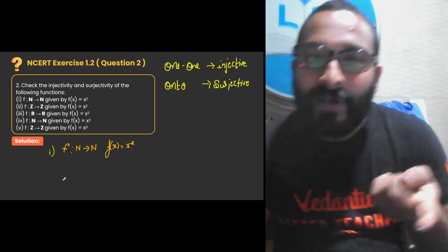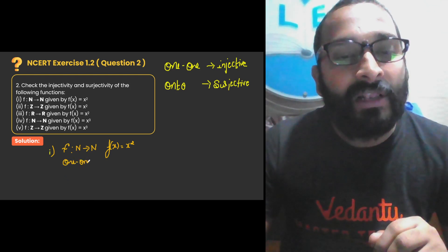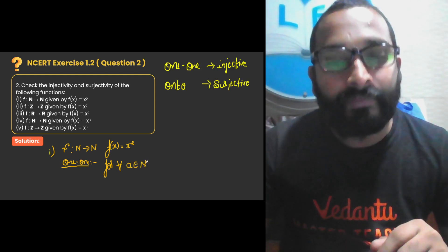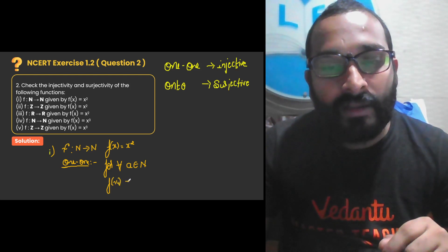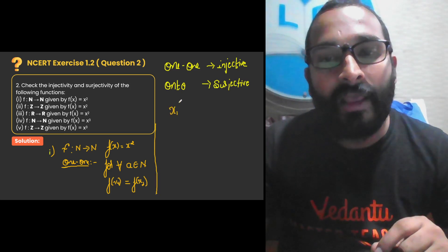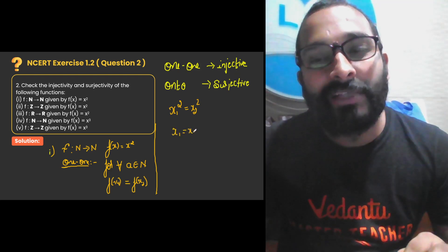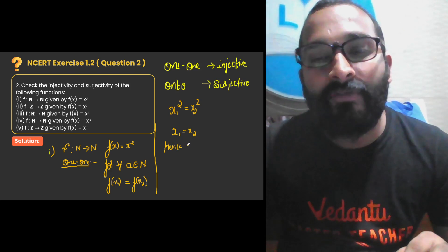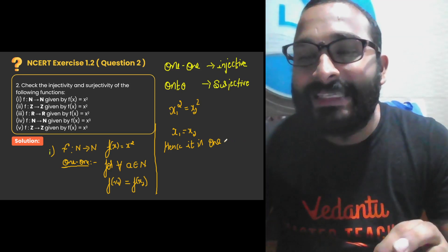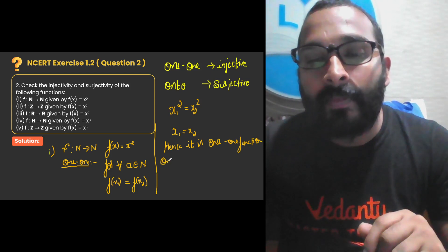Now let us check for one-one. For every a which belongs to N, if f(x₁) = f(x₂), it becomes x₁² = x₂². Since there are no two distinct natural numbers x₁ and x₂ for which their squares are equal, we get x₁ = x₂. Hence it is a one-one function. Since we are talking about the set of natural numbers, which are counting numbers, it is one-one and therefore injective.